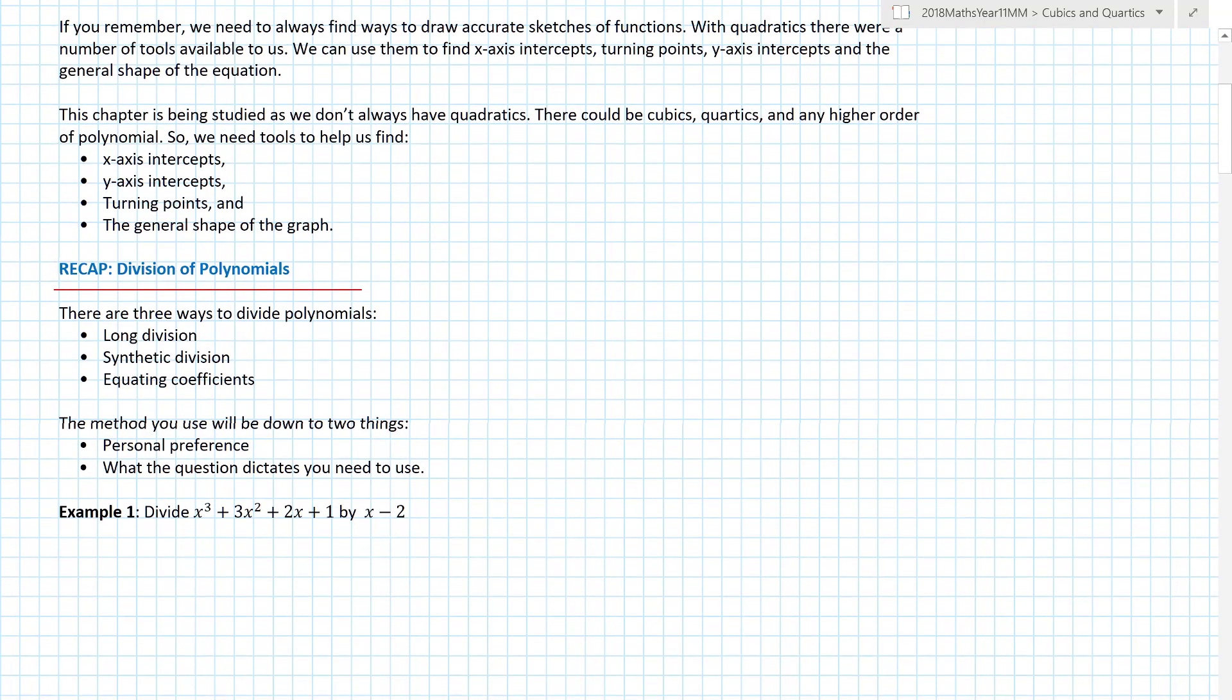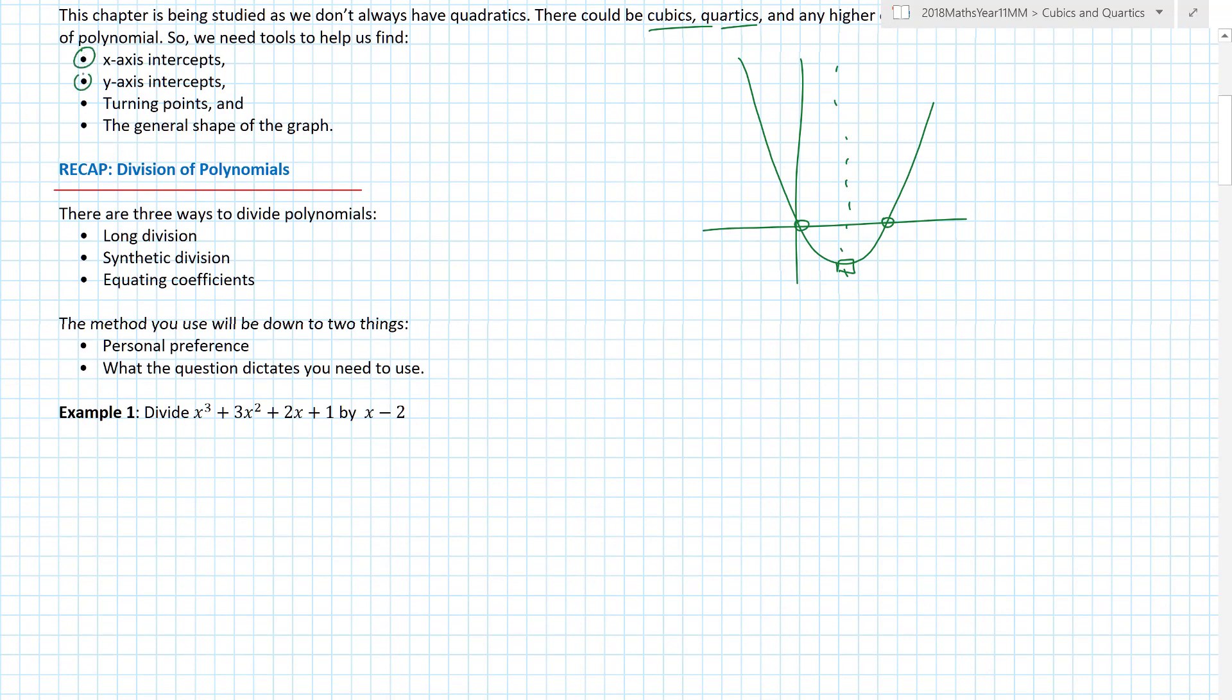If you remember, we need to be able to draw pretty accurate sketches of functions. When we had quadratics, it was great because we could use the T method, the cross method, completing the square, the quadratic equation to help us find this point here and this point here. Because of the symmetry of a quadratic, we could then use that information to help us find this point here, and if there had any point where it crossed on the y-axis, we could find that as well. This chapter is being studied as we don't always have quadratics. So we need to make sure that for every single graph we ever draw, we make sure that we have x-axis intercepts, y-axis intercepts, turning points and the general shape of the graph.